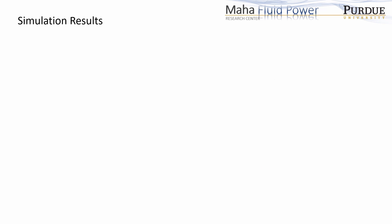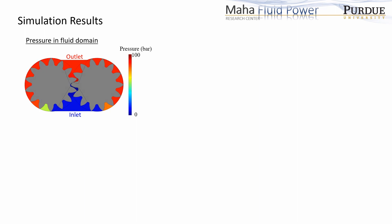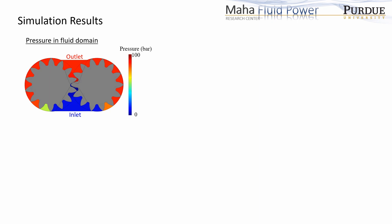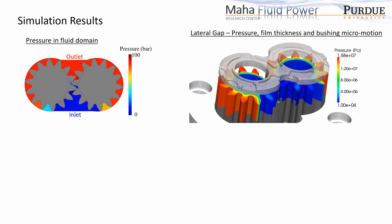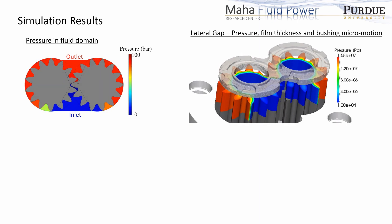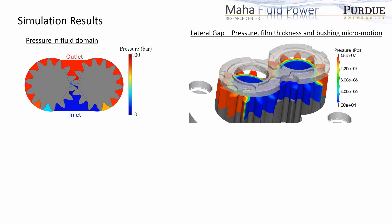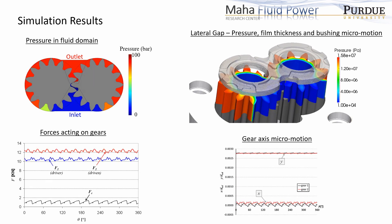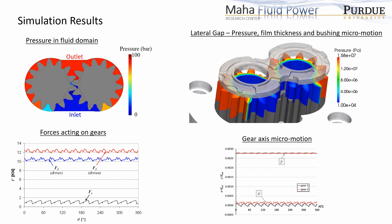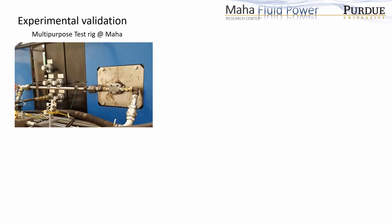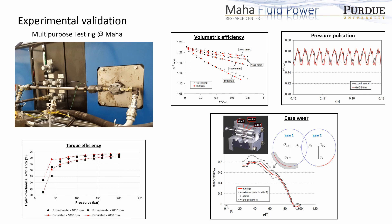Now let's see some of the results obtained from HYGsim. First is the visual representation of pressure in the fluid domain of the unit obtained from the fluid dynamic module. Next is the visual representation of the pressure and thickness of fluid film in the lateral gap and micromotion of the bushing obtained from the lateral gap module. Next are the plots showing the forces acting on gears and their micromotion. Key results from HYGsim are validated by performing tests on a multipurpose test rig at Maha. HYGsim is able to predict steady-state performance and dynamic behavior of external gear machines with very good accuracy.